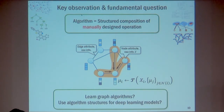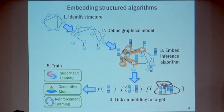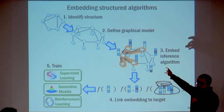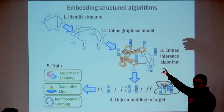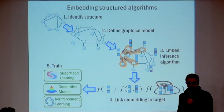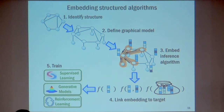The framework I'm going to present is based on modeling the problem as a graphical model and using graphical model inference algorithms to define the deep learning architecture — using the graphical model inference algorithm as a template or structure for the deep learning model. These learning algorithms produce a vector representation for each node in the graph, which you can use for node-level classification, edge-level classification, subgraph-level classification, and many other things. You can train it with supervised learning, generative models, or reinforcement learning.